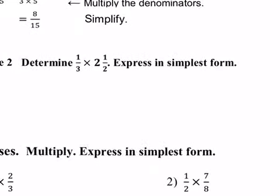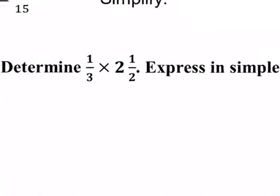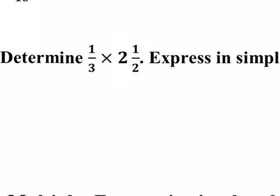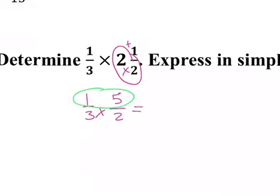Example 2, 1/3 times 2 and a half. So, what do I need to do to that 2 and a half? Turn it into an improper. And how do I do that? By multiplying 2 and 2 and then adding 1. So, I get 5 over 2 and then multiply across. 5 times 1 and 3 times 2 and that's it. It's as small as we can go.